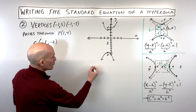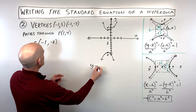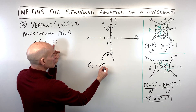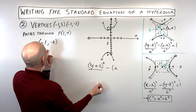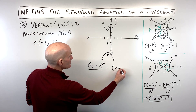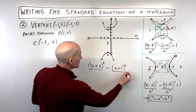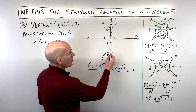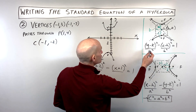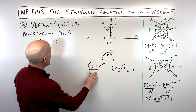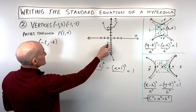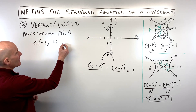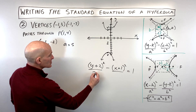Because it opens vertically, I'll start building the equation: (y - (-2))² over a² minus (x - (-1))² over b² = 1, which is (y+2)² over a² minus (x+1)² over b² = 1. The value a is the distance from the center to the vertex — from y = -2 to y = -7, that's 5 units — so a = 5, and a² = 25.